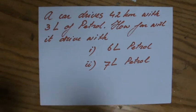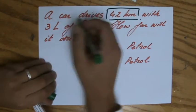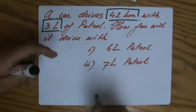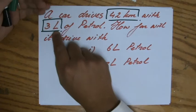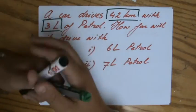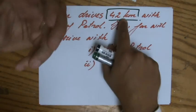If we highlight the important information, the car drives 42 kilometers with 3 liters. With direct proportion, if you give it more liters of petrol, the car will also drive further. That's direct proportion. If one variable increases, the other one will increase.